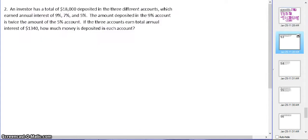Let's take a look at question two. We have an investor which has a total of $18,000, and it's deposited into three different accounts with annual interest rates of 9%, 7%, and 5%. The amount deposited in the 9% account is twice the amount of the 5% account. The three accounts earn a total annual interest of $1,340. How much money is deposited in each account? The first thing is we want to look and see. I'm going to have X be the 9%, Y the 7%, and Z the 5% account. The other piece of information says the 9% is twice the 5%, so X = 2Z.